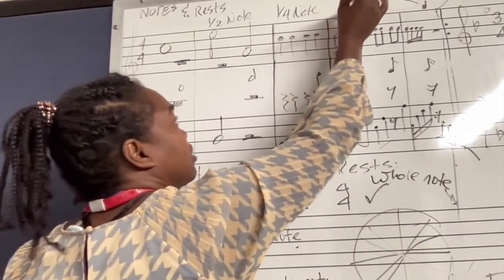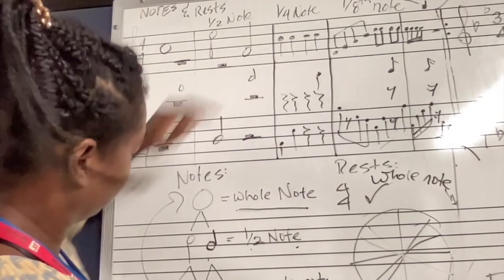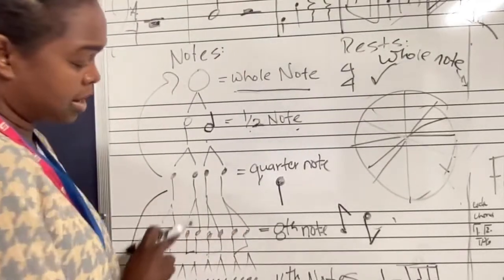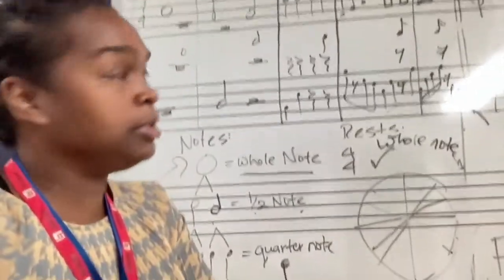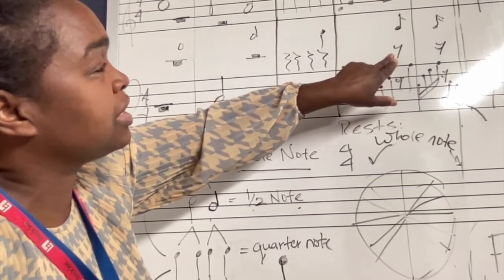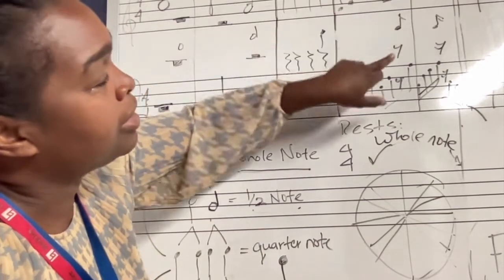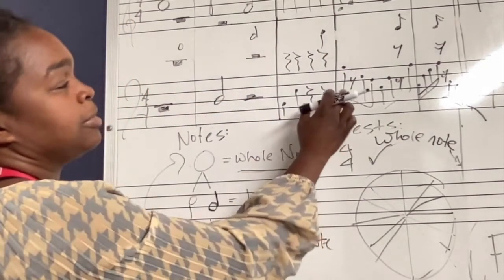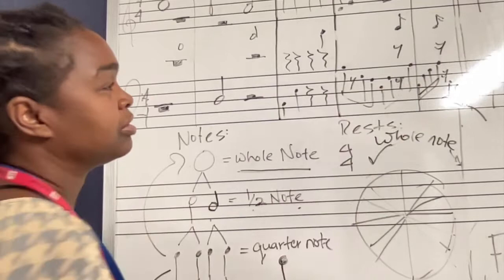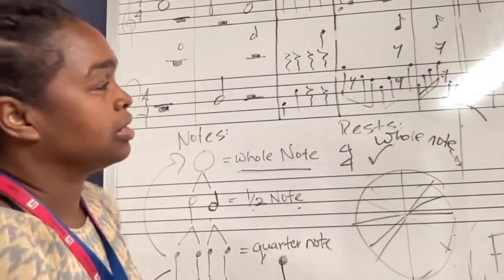Here we have the eighth note example. Remember we split the quarter note in half — that's how we get eighth notes. This is how it would be notated on the staff. If I want to add a rest of that same value, a single eighth note looks like this, and a single eighth note rest looks like that. So maybe I play this beat, rest here, play these two, rest here, and play that — like: one-and, one-and, two-and, three-and, four-and.